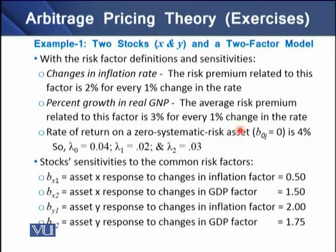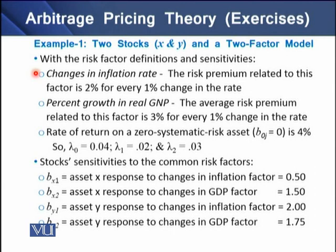This is example one. We have two stocks X and Y with a two-factor model. The first factor is changes in the inflation rate, with a risk premium of 2% for every 1% change. The second factor is the real GNP, with a risk premium of 3% for every 1% change in the rate.